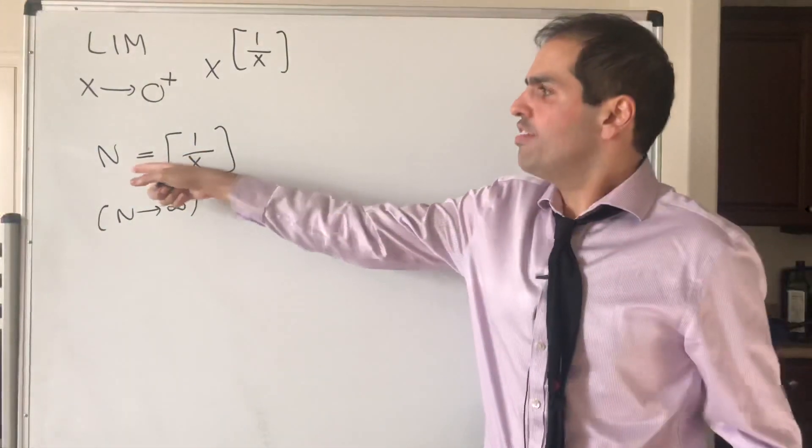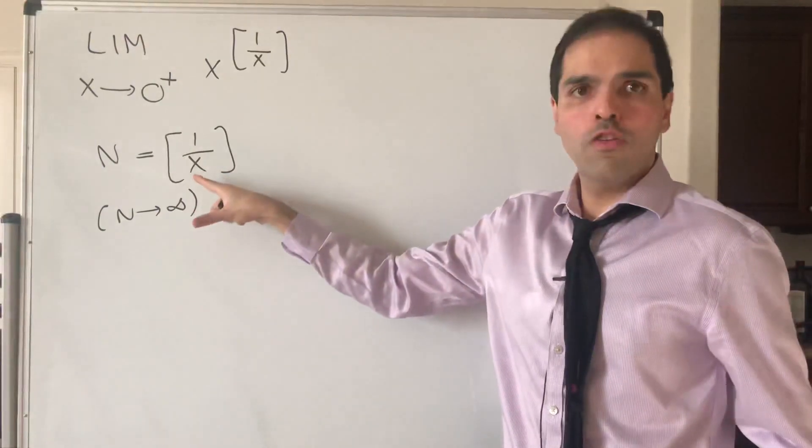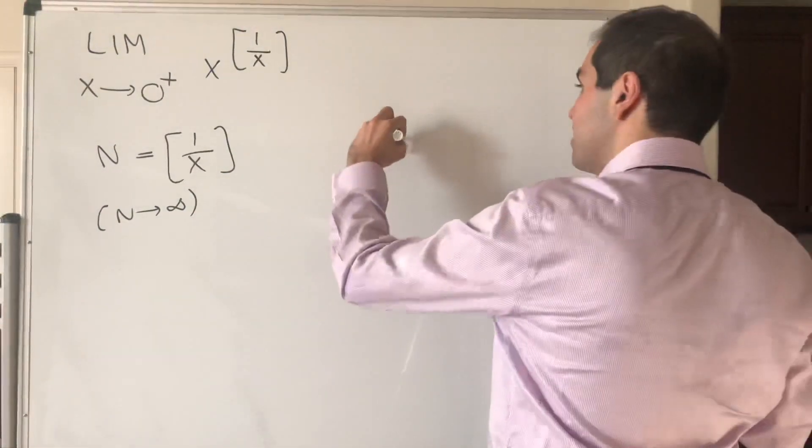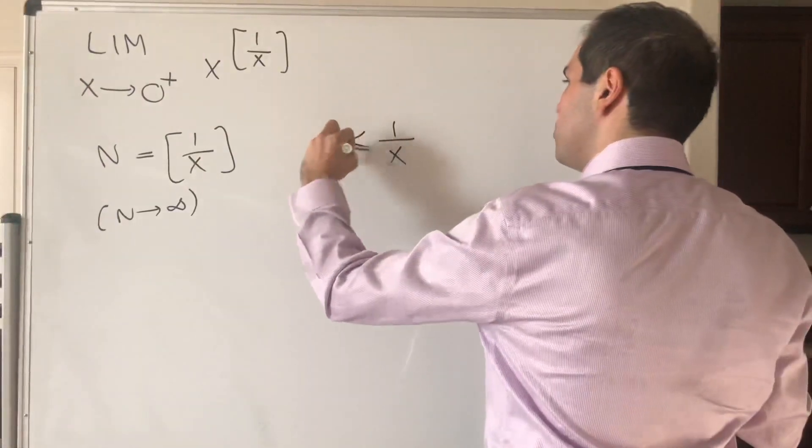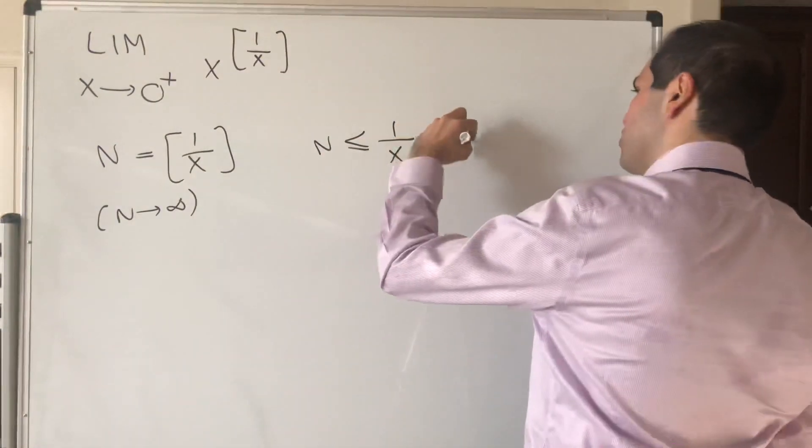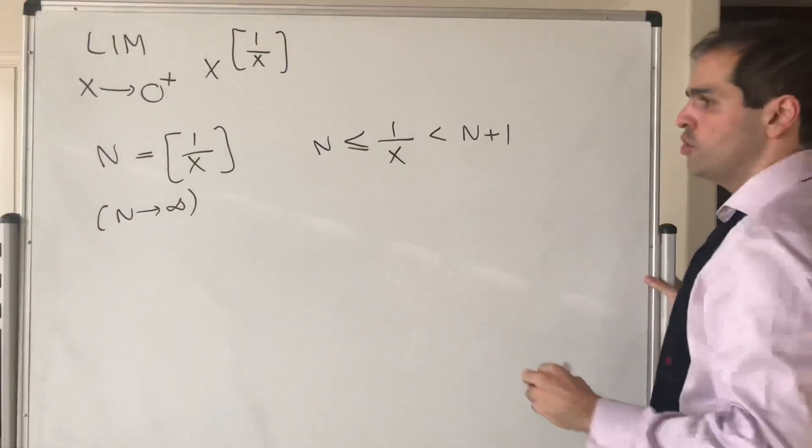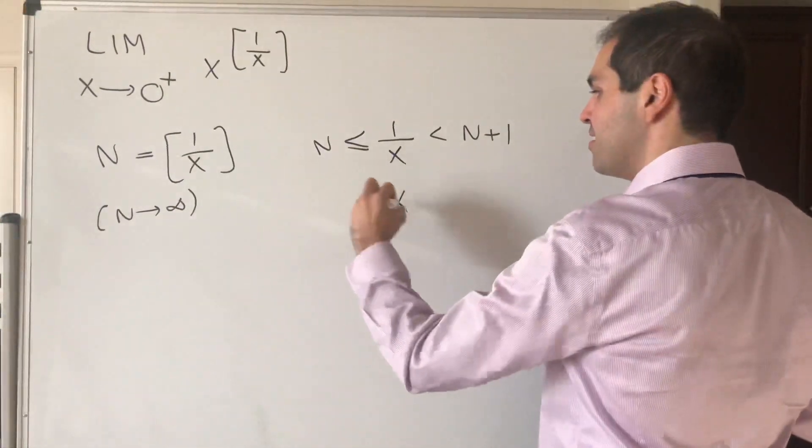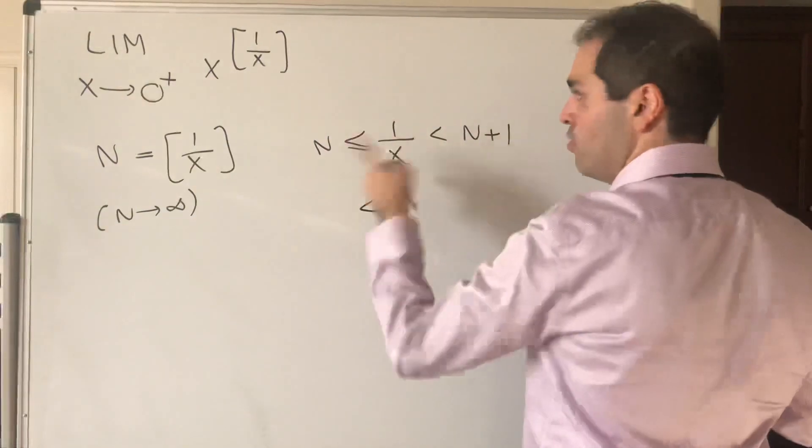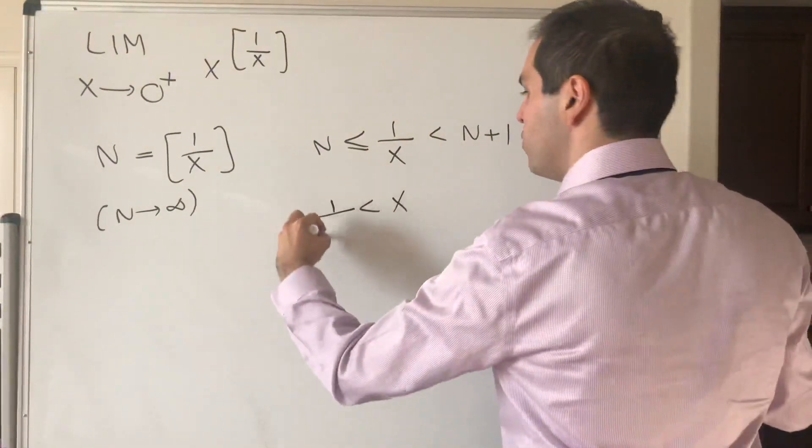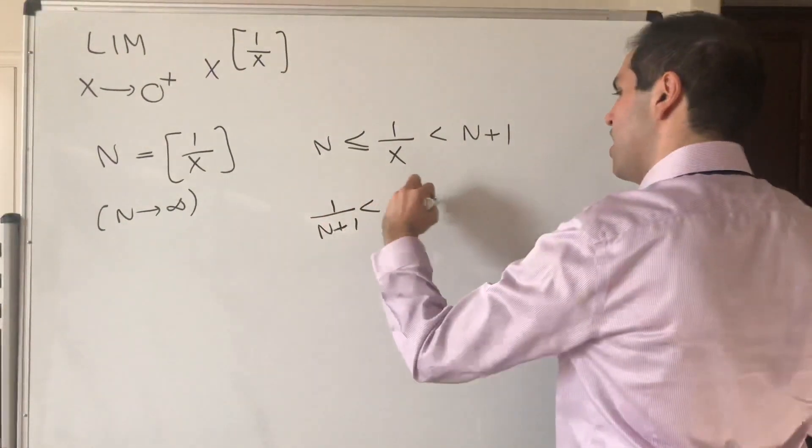Now what is the definition of n equals floor of 1 over x? It just means that 1 over x is squeezed between n and n plus 1. So it's between those two integers, and in particular, x is squeezed, remember to flip the two, between 1 over n plus 1 and 1 over n.